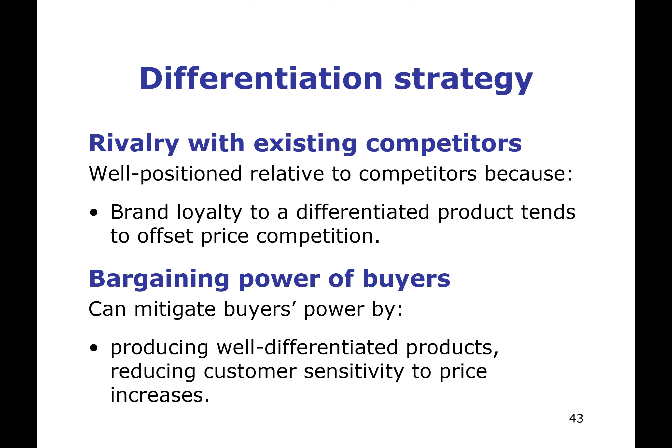So how does differentiation deal with the five forces? In terms of rivalry, a differentiated product protects you from competitors because of brand loyalty. People are loyal to iPhone, people are loyal to Apple, people buy the same car over and over again, people have a preferred brand of shampoo. These are all about differentiation and customer loyalty. Differentiation can also mitigate the power of buyers, because buyers seeking a differentiated product with unique features that match their needs are less price sensitive.